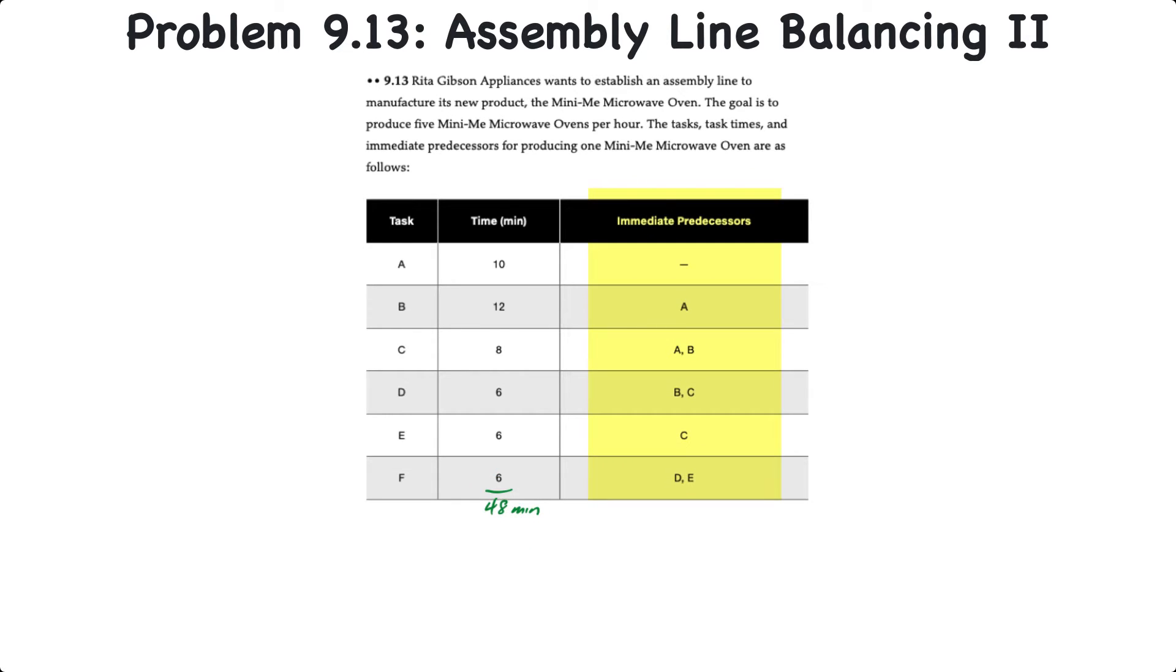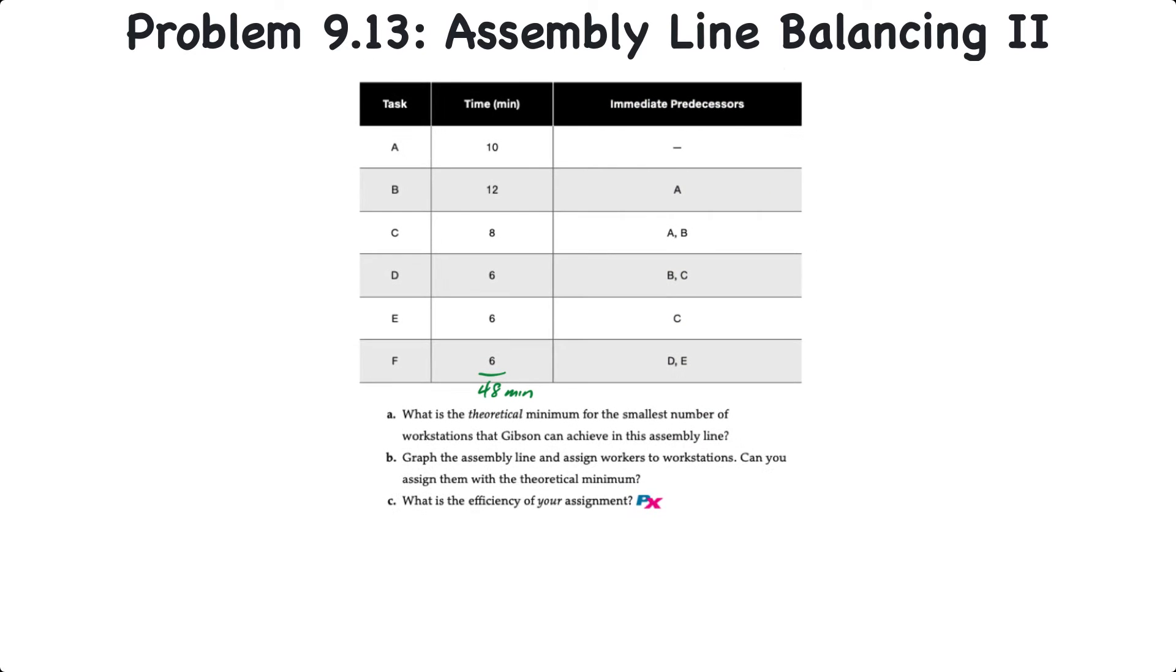We also have all of the immediate predecessors that will enable us to draw a map of what the assembly line would look like. We have three requirements with this problem. The first is to determine the theoretical minimum for the smallest number of workstations that Gibson can achieve in the assembly line. Two, draw the assembly line and assign workers to the stations, which in essence is to balance the line, and to determine whether or not we can assign them with the theoretical minimum. Third, we'll calculate the efficiency of our balanced line.